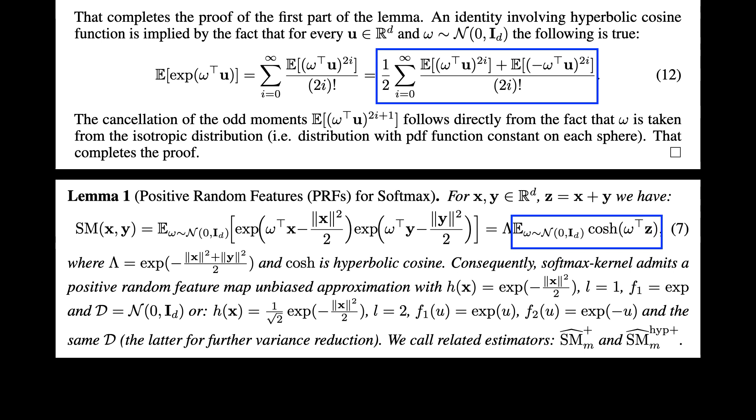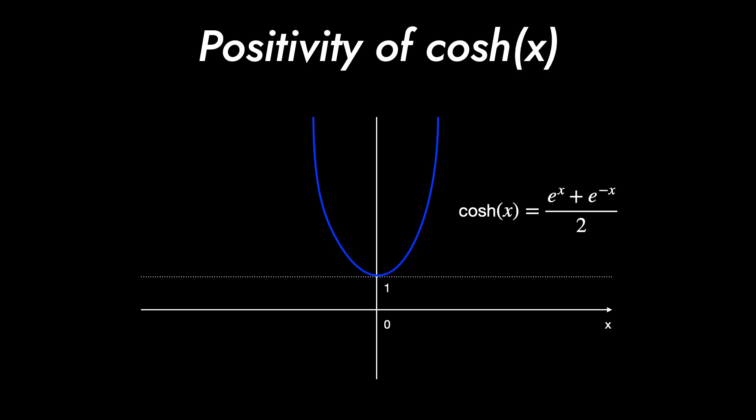As a result, the SM function can be redefined with lambda and the expectation of output of hyperbolic cosine function using normal samples. If we restrict to finite number of samplings, it is the approximation. It turns out that we can specify f1, f2, and h of x. This method is notated by hype plus. They also suggest a simpler version of approximation with positive random features notated by just plus in superscript. This is the plot of the hyperbolic cosine which has strictly positive outputs.